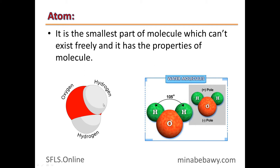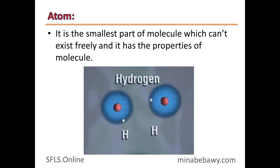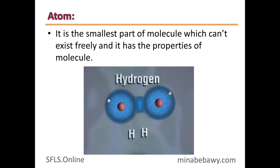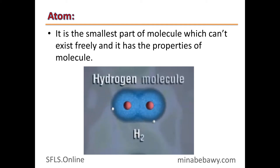As you can see, this is called a water molecule. It consists of one oxygen atom and two hydrogen atoms. These two hydrogen atoms, when they combine together, form a hydrogen molecule. So each hydrogen molecule consists of two hydrogen atoms.